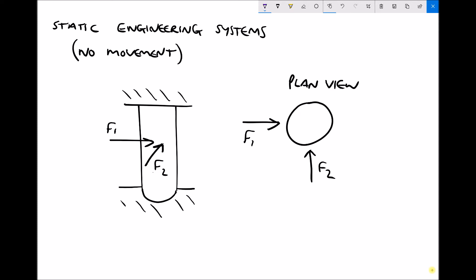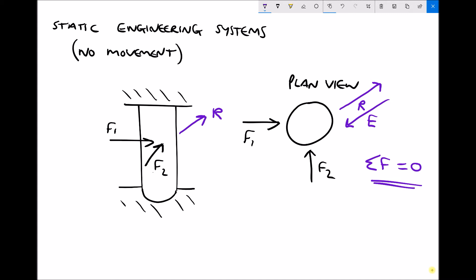When those two forces are applied to the column, we still get a resultant force in a particular direction. Normally, a resultant force would mean that object is moving or accelerating. But in a static engineering system, as well as the resultant, we end up with an equal and opposite force called the equilibrium. So F1 and F2 cause a resultant force R, but the equilibrium force balances or cancels out that resultant. The net result is that the sum of the forces in the system equals zero — there's no net force and the object isn't moving.